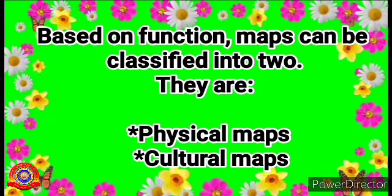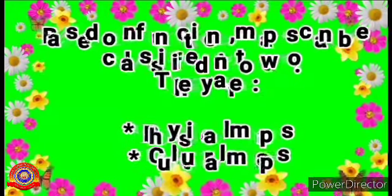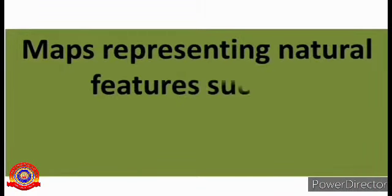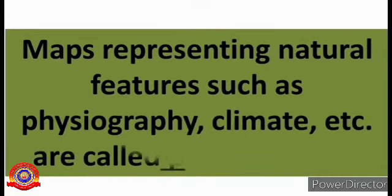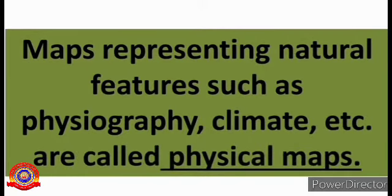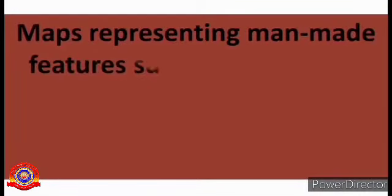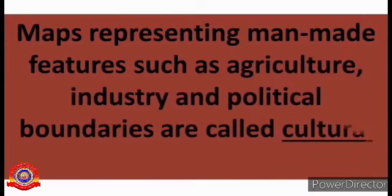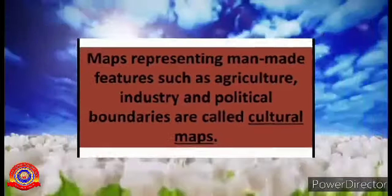Based on function, maps can be classified into two: physical maps and cultural maps. Maps representing natural features such as physiography, climate, etc., are called physical maps. Maps representing man-made features such as agriculture, industry, and political boundaries are called cultural maps.